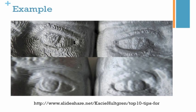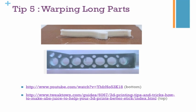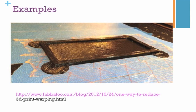Tip number five is warping of long parts. Warping can occur due to bad adhesion, bad orientation as explained previously, or simply because your part is naturally long. You can see from the image on the top that the long part warps at the sides. One way to solve this is by introducing holes so the part has less tendency to warp, since there is a break in the material lengthwise. Another way is to specifically build rough support material to cover the corners of your long rectangle, making them less likely to warp.